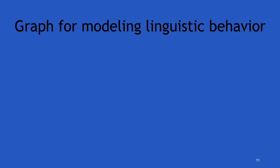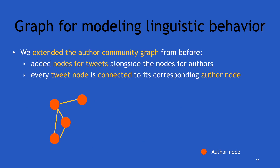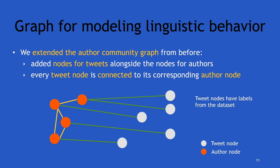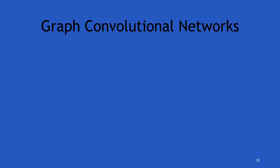For modeling the linguistic aspect, we extend the previous graph. In the previous graph, we had author nodes and connections between authors. We extend that graph by adding nodes for tweets in the training set, and on this extended graph we apply graph convolutional networks.